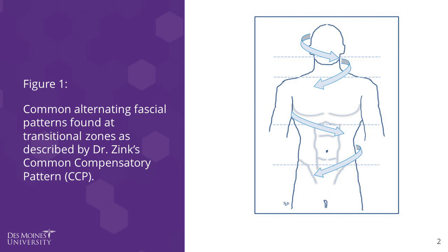Some of the key somatic dysfunctions in his treatment approach were found at the transition zones of the body, as these are not only areas of increased stress, but they're also closely associated with transverse diaphragms. We will discuss the important structures and functions of the thoracolumbar junction, or T12-L1 region of the spine.